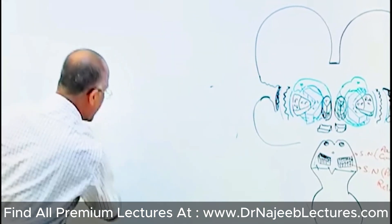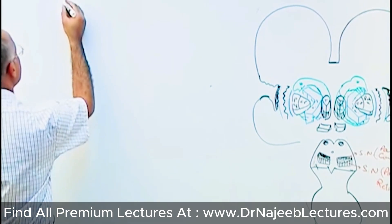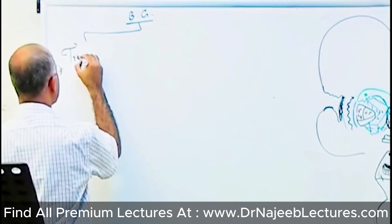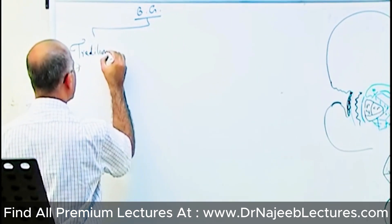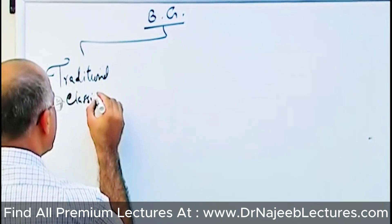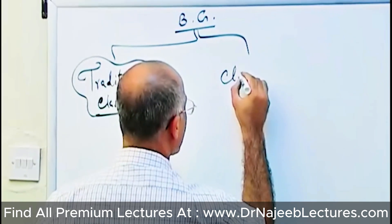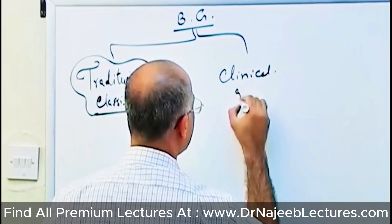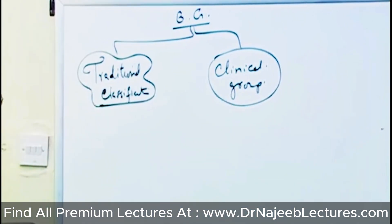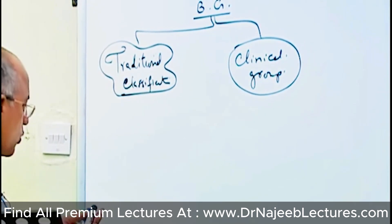Basal ganglia are basically classified or grouped in two ways: there is the traditional grouping or classification of components, and there is the clinical grouping or classification of basal ganglia. When we talk about the traditional classification of basal ganglia, it includes certain structures.